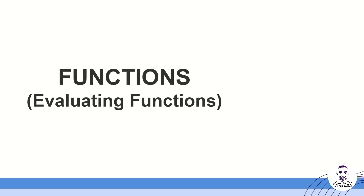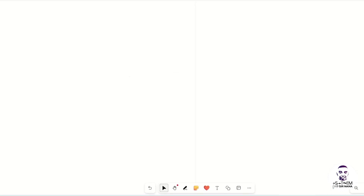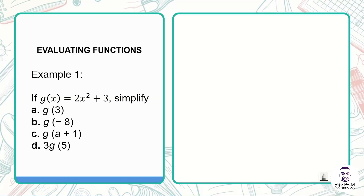In this lesson we are looking at how we can evaluate functions. The question says that if g of x is equal to 2x squared plus 3, we must evaluate: g of 3, g of negative 8, g of a plus 1, and then 3 multiplied by g of 5. So basically we have been given the function g of x which is equal to 2x squared plus 3.